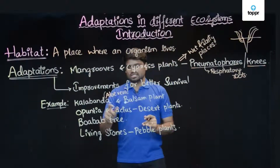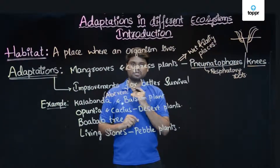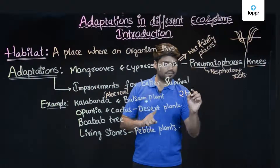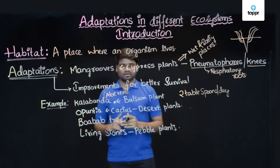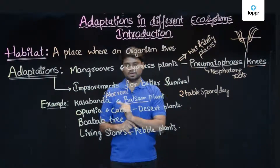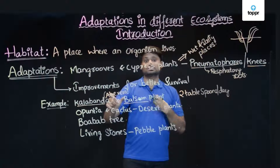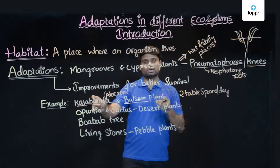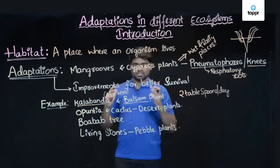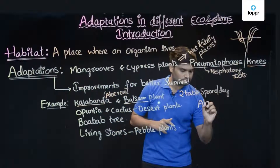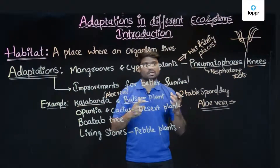Let us do an experiment. Take these two plants in separate pots and keep them at home, providing just two tablespoons of water each per day. After a week, the balsam plant will dry up, whereas Kalabandha — aloe vera — will not dry up. Why? Because aloe vera has certain adaptations to survive in places where water is not available. So what are these adaptations that aloe vera has?